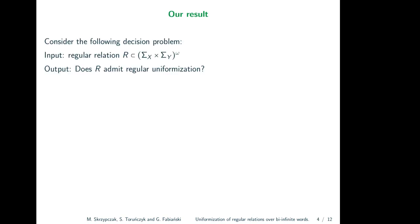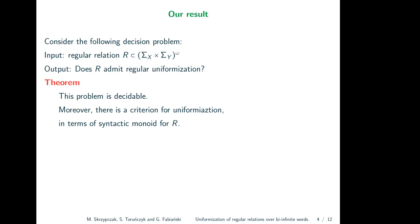What did we prove? We consider the following decision problem: given as input a regular relation over bi-infinite words, does this relation admit a regular uniformization? We proved that this problem is decidable. Moreover, we found a nice algebraic characterization: you build the syntactic monoid for the relation R and check some algebraic conditions. In the rest of the talk, I want to give you a feel for how this uniformization problem works and why it is deeper than it first appears.